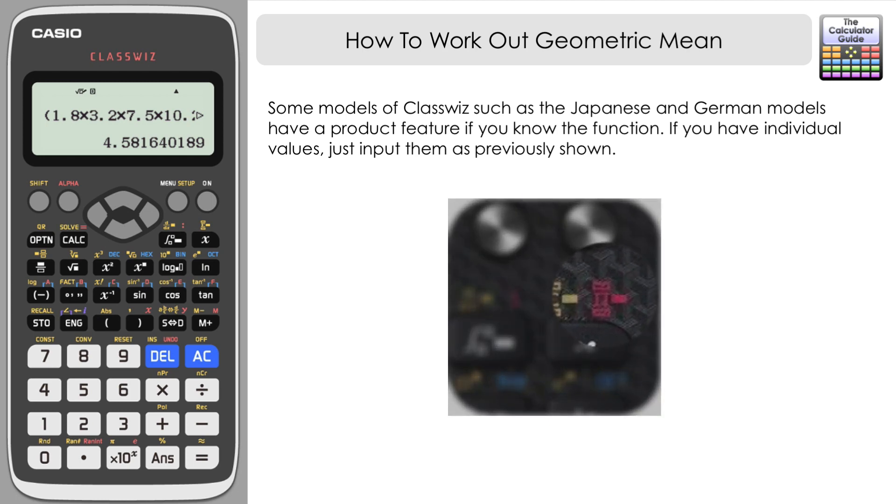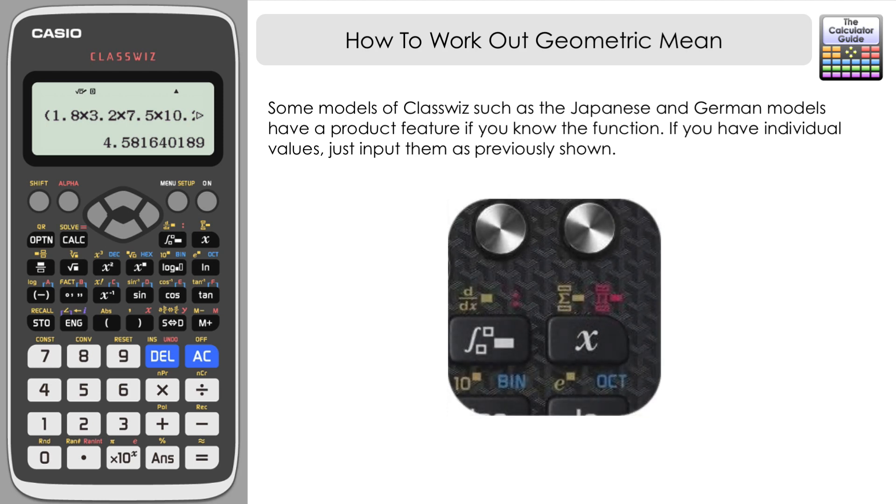If you know the equation of a function and wanted to work out the product of the values up to the nth term of that, you can use this feature. But you do need to know the formula for the nth term essentially of your values. So certainly useful potentially if you have a sequence where you know the nth term of the sequence, you could use that feature.